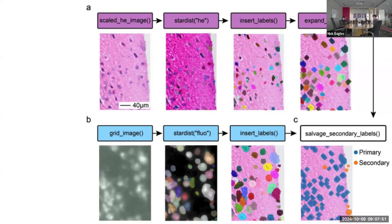Then there's a wrapper around the segmentation tool called Stardist, which has pre-trained models designed to segment nuclei in H&E images. It's a convenient wrapper that does the nuclear segmentations. The insert labels step associates the segmentations — which are polygons — with individual bins on the Visium HD data.